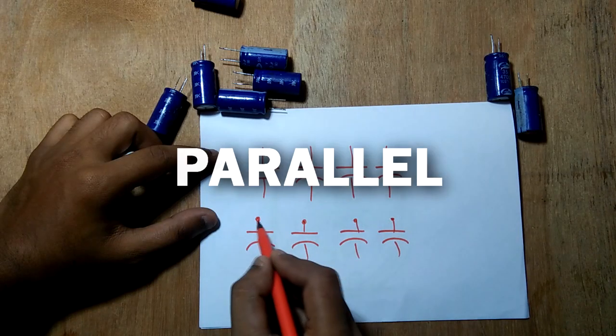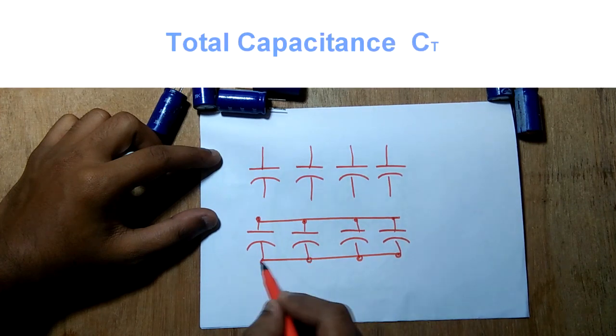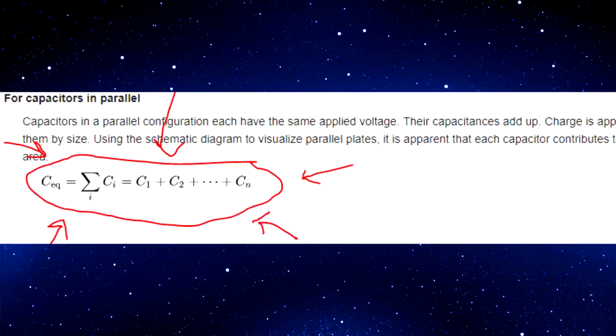When we connect capacitors in parallel, they will share a common voltage, but the total capacitance of these 4 capacitors will be the sum of the individual capacitance.